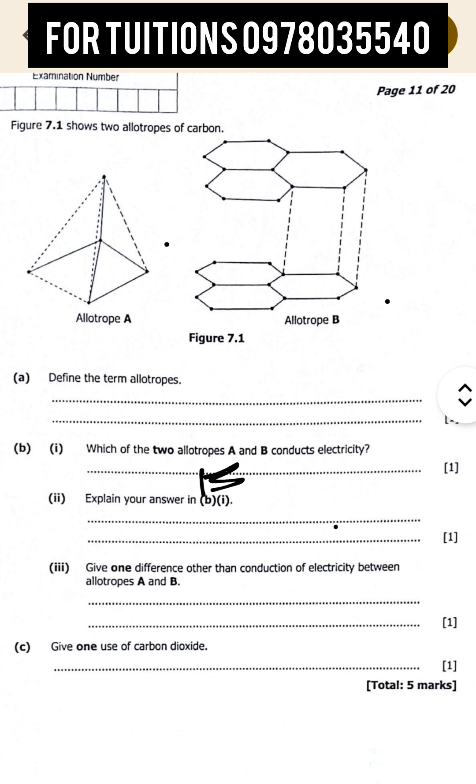The reason why B conducts electricity is because it has got free moving electrons. That's the main reason.